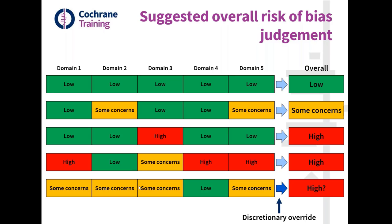In this last example, if we have several domains which have 'some concerns,' you might judge that the accumulation of these concerns is sufficient to call the overall result high risk of bias. But this is a judgment the user needs to make and should usually provide justification explaining the concerns and how the accumulation increases the risk. The RoB2 framework allows users to override the algorithm-based rules for domains and for overall, but justification should be provided.